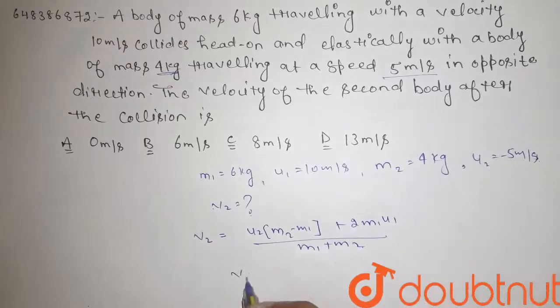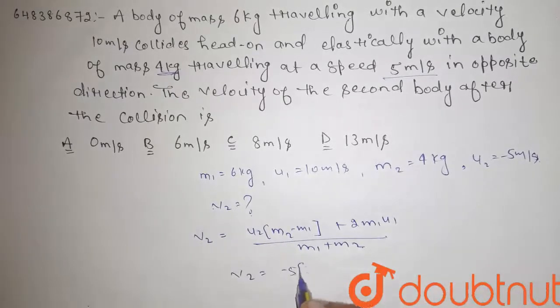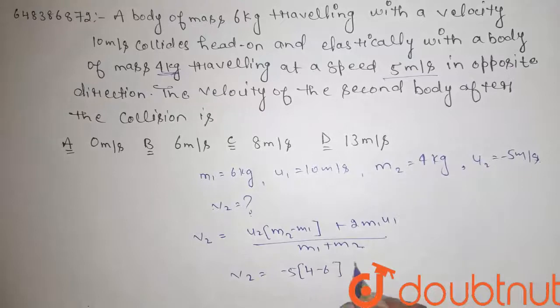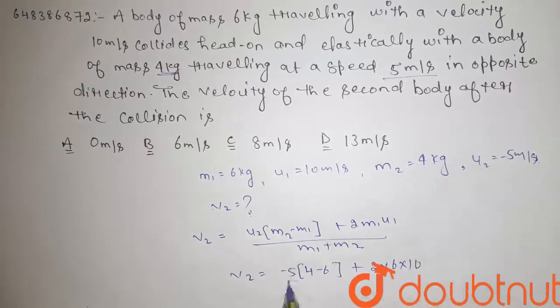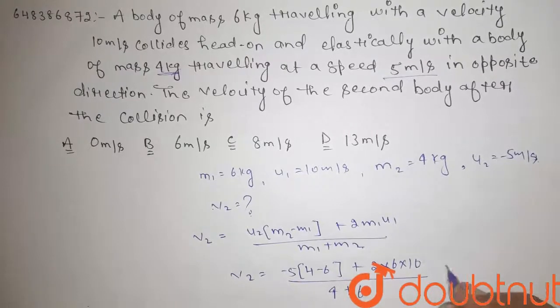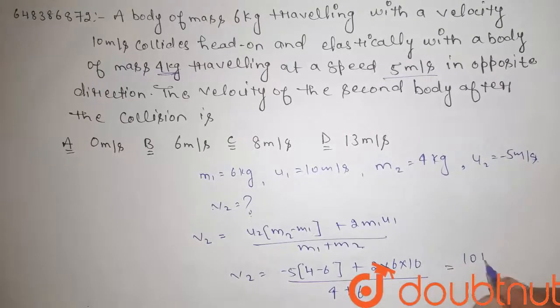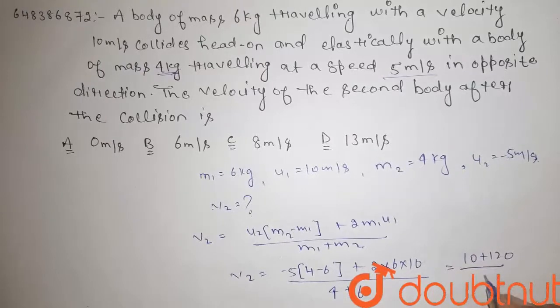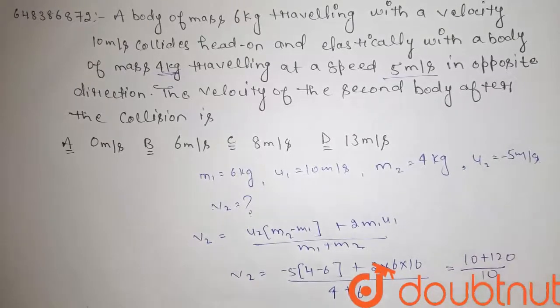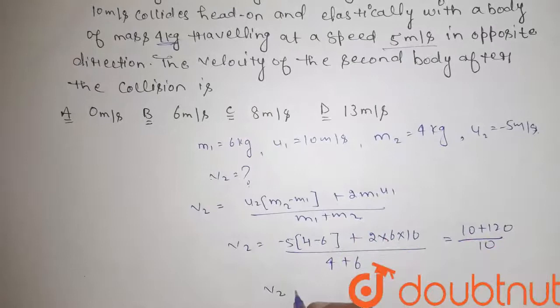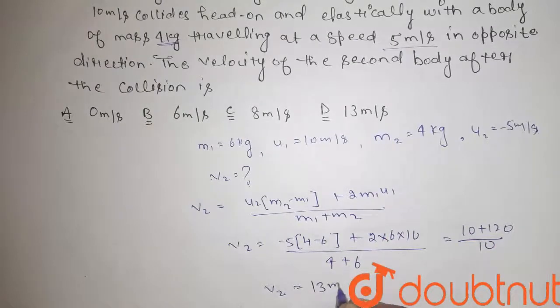So v2 equals minus 5 into 4 minus 6 plus 2 into 6 into 10 divided by 4 plus 6. That should be equal to 10 plus 120 divided by 10. So guys, v2 is equal to 13 meter per second.